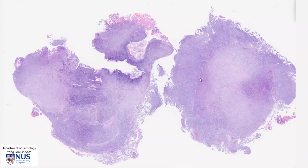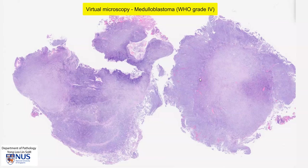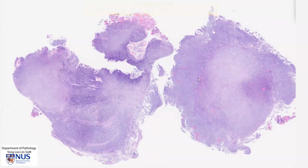Hello, this is a virtual microscopy slide of a medulloblastoma. A medulloblastoma is a high-grade, WHO grade 4, embryonal type CNS tumor. This is a primary tumor in the brain. It occurs in the posterior fossa or infratentorially, and it very frequently occurs in children.